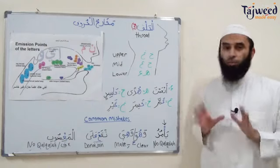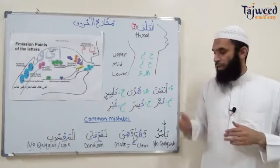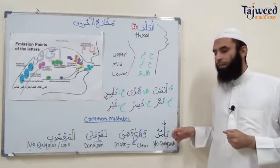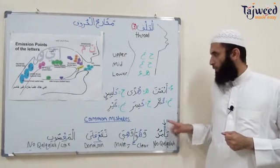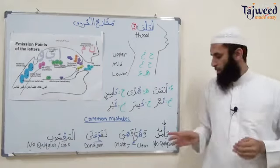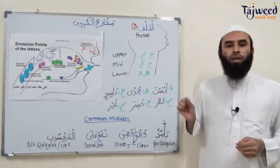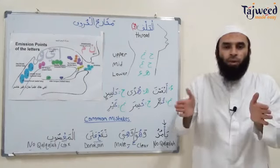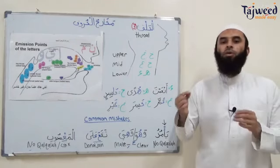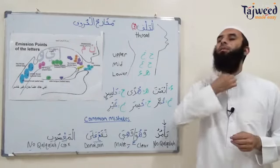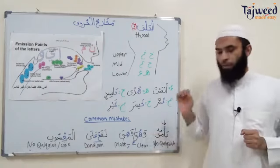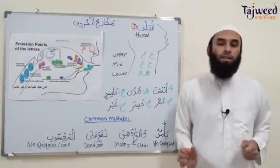Now let's look at some of the common mistakes that people make when they pronounce these letters — we hear this on a regular basis. Number one: the word ya'muru. Whenever there's a hamza sakinah — hamza with a sukun — we have to make sure we do not produce a qalqala echo sound. Ya'muru, ya'muru — and not ya'muru with a bounce. We do not echo it. Ya'muru is wrong. Just go to the makhraj: ya'muru, ya'muru, ya'muru — not ya'muru.